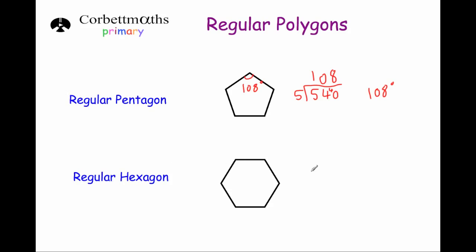And finally, a regular hexagon. In a regular hexagon the angles add up to 720 degrees, and because there are six angles that are all the same size, if we divide 720 by six we will find the size of each angle. 720 divided by six equals 120 degrees, so each angle in a regular hexagon is 120 degrees.